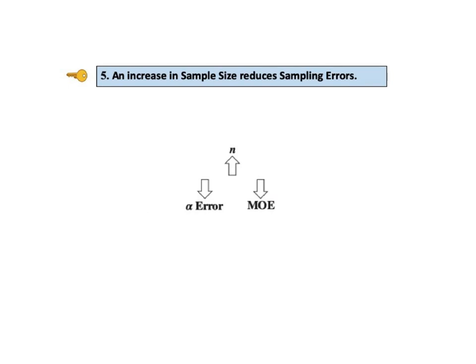There are tradeoffs between different types of sampling errors. However, there is a way to have our cake and eat it too — increasing sample size is like a universal cure. Increase the sample size n and you decrease the probability of a sampling error. As sample size n goes up, both alpha error and the margin of error go down, because a larger sample more accurately represents the entire population or process.